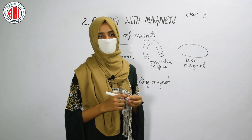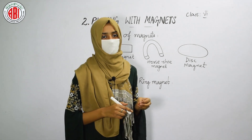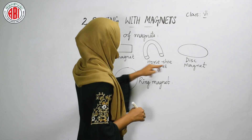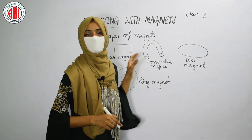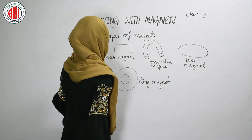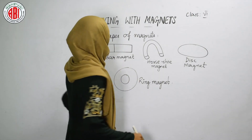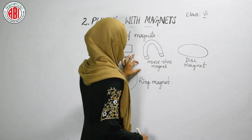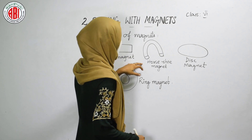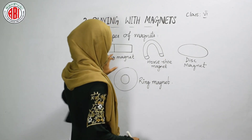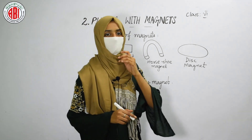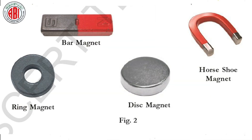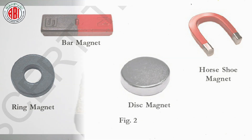Let us discuss about the shapes of the magnet. Magnets are present in different shapes. They are bar magnet, horseshoe magnet, disc magnet, and ring magnet. All these magnets possess two poles — north pole and south pole. The bar magnet is of rectangular shape, horseshoe magnet shows a curved shape, disc magnet is disc-shaped, and ring magnet shows the shape of a ring. Based on the shapes, we call them by these different names.